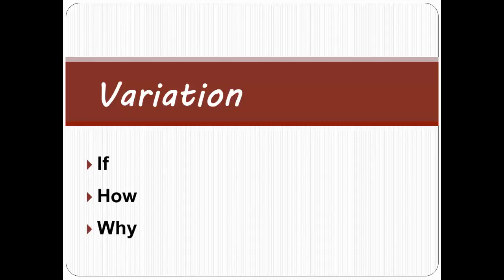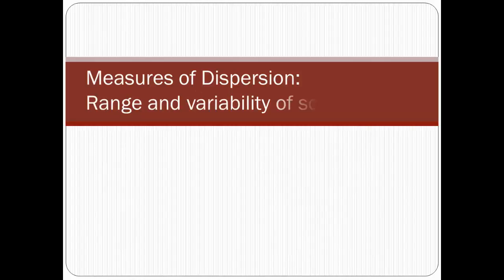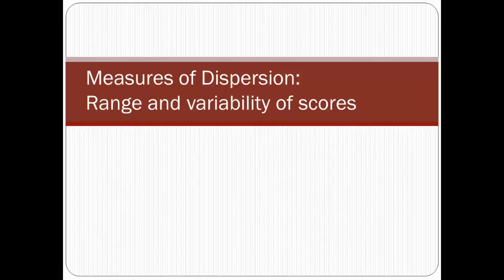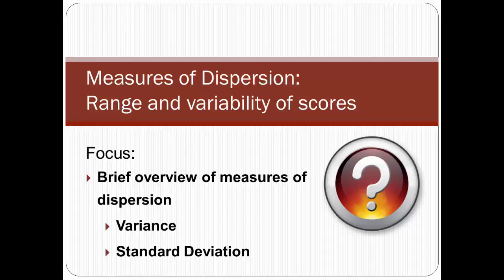The first step to determining if the data vary is to summarize the data. You're probably familiar with measures of central tendency — the mean, median, and mode. Now let's look at measures of dispersion, which help us understand the range and variability of scores in a dataset. The focus of this video is to provide a brief overview of the most common measures of dispersion, and provide more detail on two of those measures: variance and standard deviation.